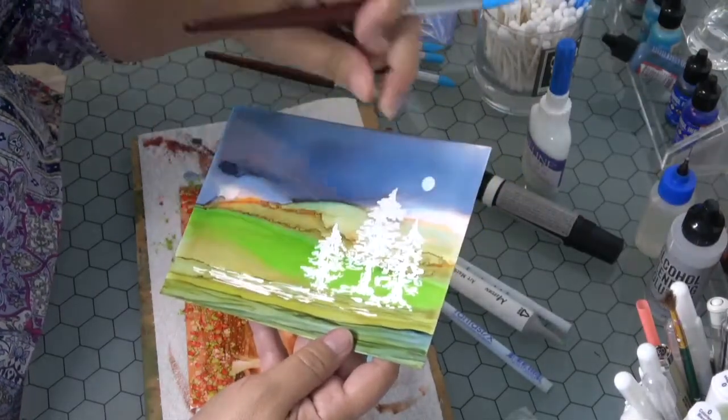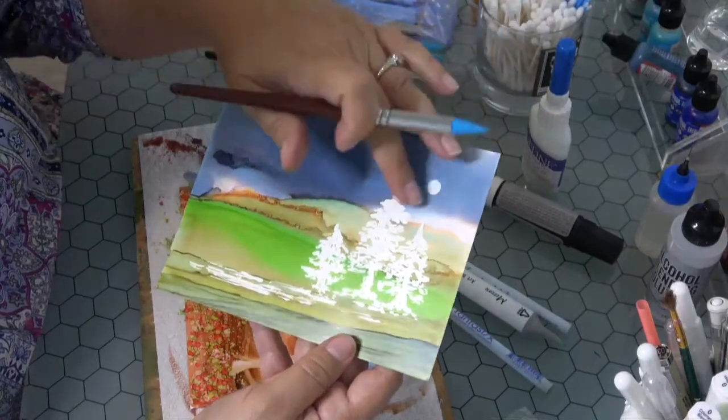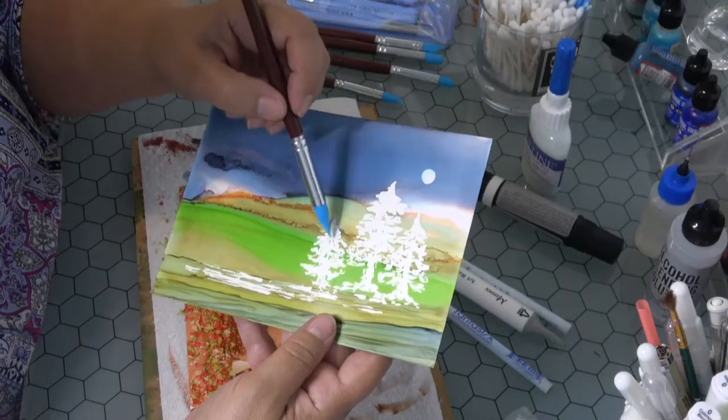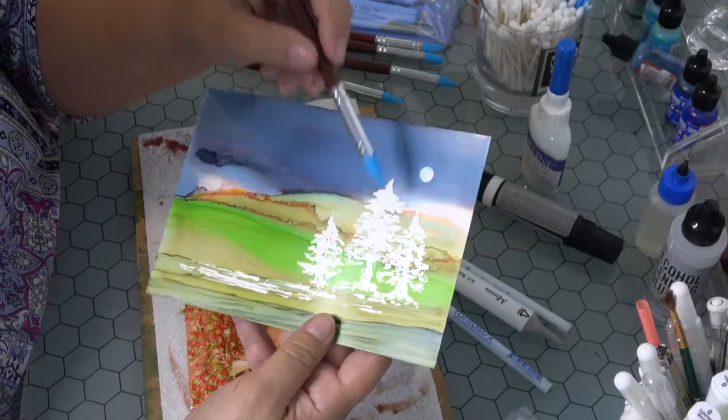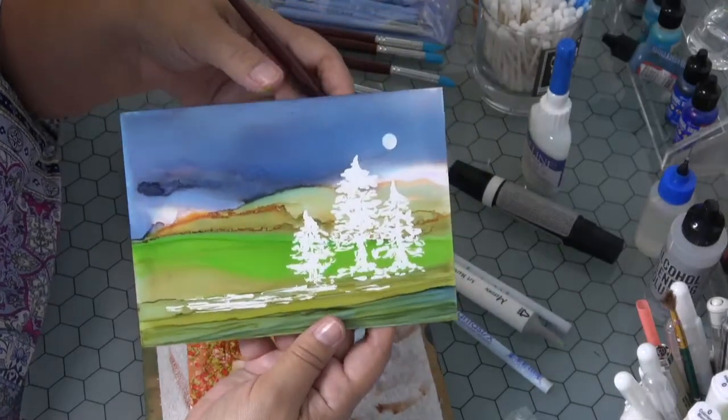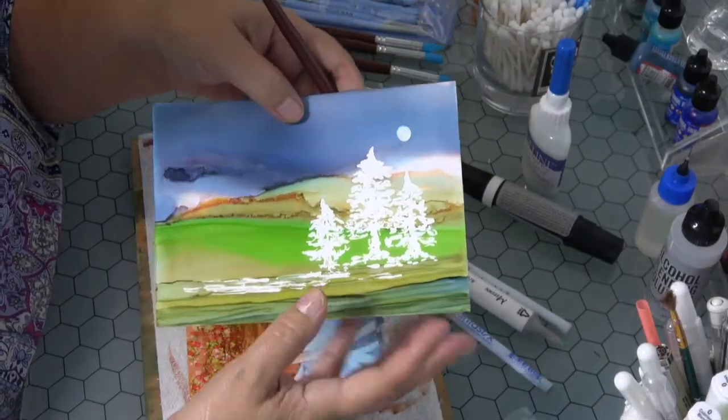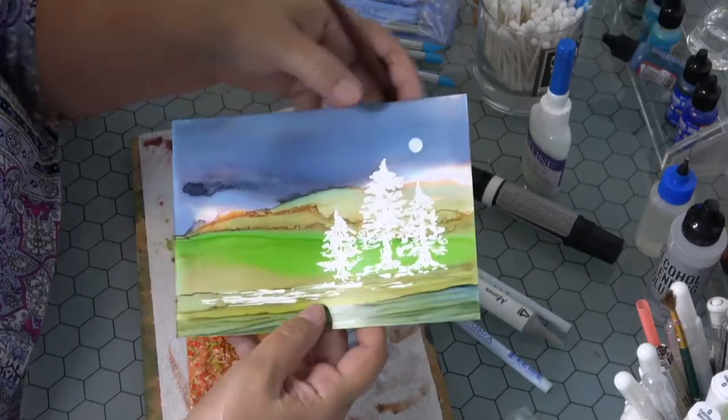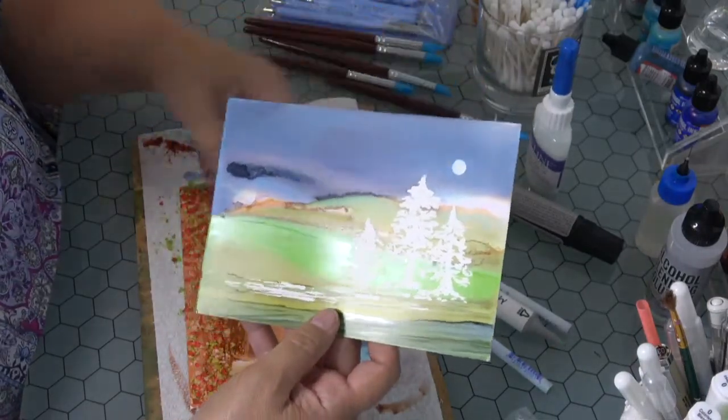And this is what it left. All the white area is where the masking fluid was. Now if I wanted to I could come back in and add some color within those trees or I could just leave it like this. I thought this was a very unique piece the way it looks with the white exposed tree and a little bit of ground covered in the moon.